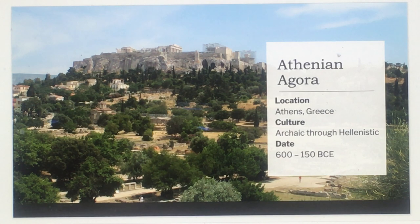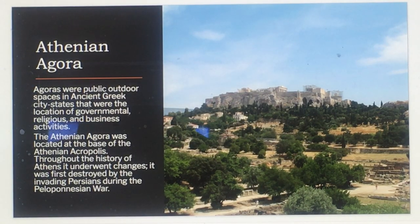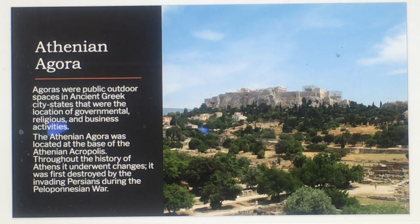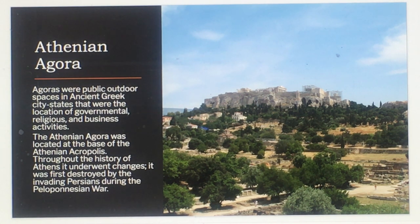The Athenian Agora in Athens, Greece, dates from the Archaic through Hellenistic periods, roughly 600 to 150 BCE. Agoras were public outdoor spaces in ancient Greek city-states that served as locations for government, religious, and business activities. The Athenian Agora was located at the base of the Athenian Acropolis.